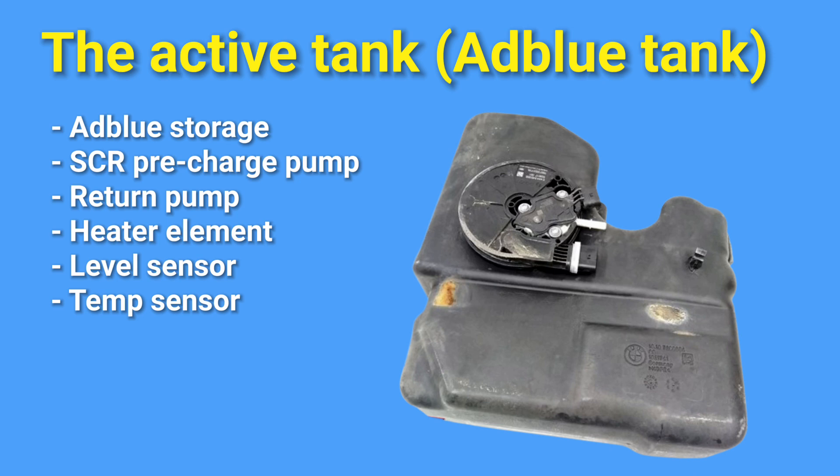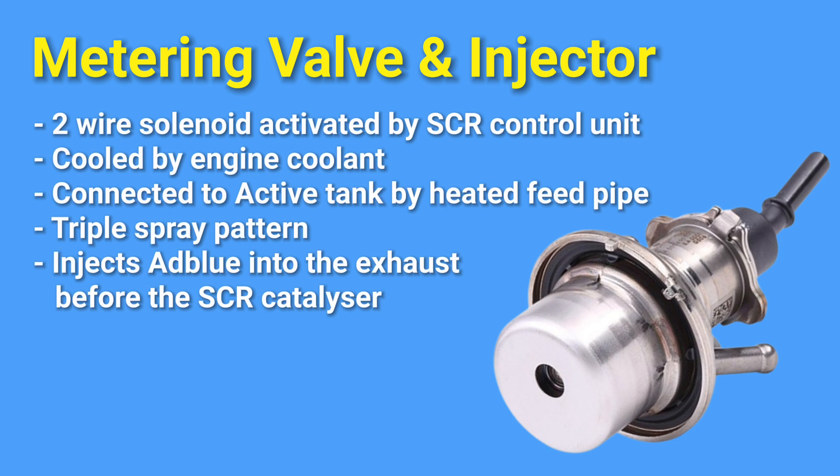The final part of the delivery module is the evaluation electronics. The SCR metering module is mounted upstream of the SCR catalytic converter within the exhaust system and is operated by the SCR control unit. Commands, including the determined amount of AdBlue and authorization for release, are relayed from the Digital Diesel Electronics to the SCR control unit through the powertrain CAN. The metering of AdBlue varies based on factors such as load, flow rate, exhaust gas temperature, and the respective temperature and load profiles.